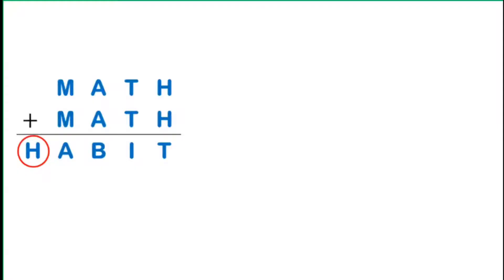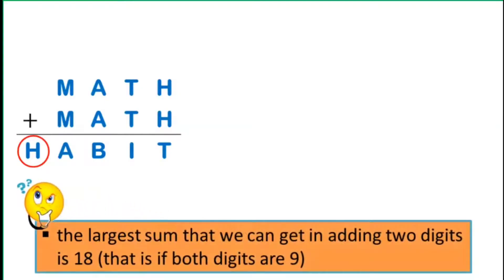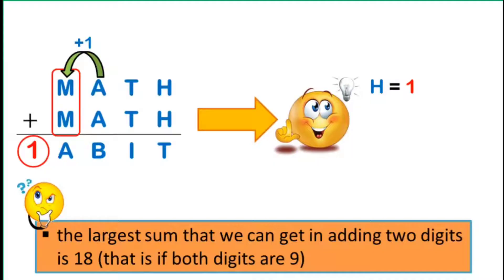Take note that the largest sum that we can get in adding 2 digits is 18, that is, if both digits are 9. With that, by adding M plus M, even if we anticipate the possibility that there is a carryover of 1 from the 100th place, the most that we can have is 18 plus 1 or 19. Hence, the corresponding digit for the letter H must be 1. It follows that all the other Hs will be replaced by 1.